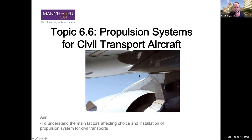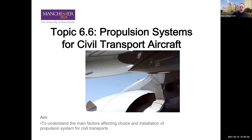We'll close the poll and share it. The first question: what types of engines are typically used on modern commercial transport aircraft? The options were turbojet, ramjet, piston prop, turboprop, turboshaft, and turbofan. All of you who responded obviously didn't choose ramjet — there are no civil transport aircraft that use ramjets.